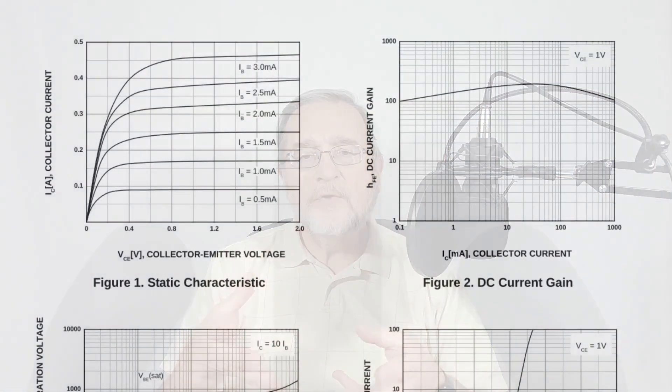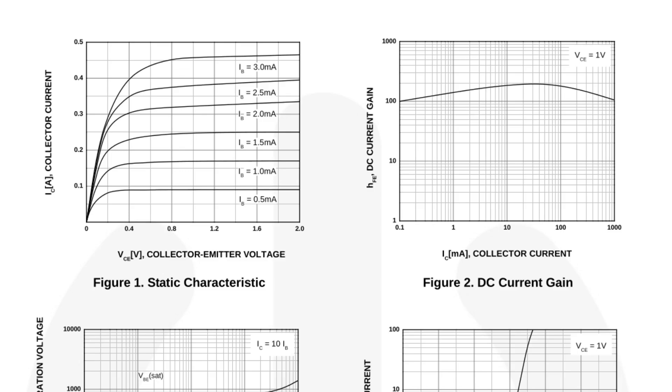A curve tracer is basically a graphical instrument that plots a current versus voltage diagram for any electronic component, like, for example, a transistor, or a resistor, or a capacitor. It is normally used in conjunction with an oscilloscope to visualize the characteristics of the component in a graphical format, like those used in the component datasheets.